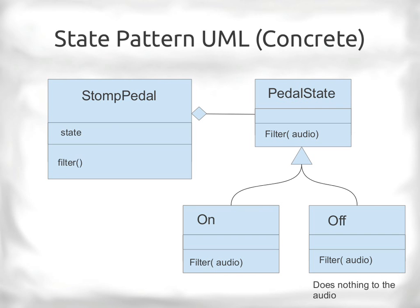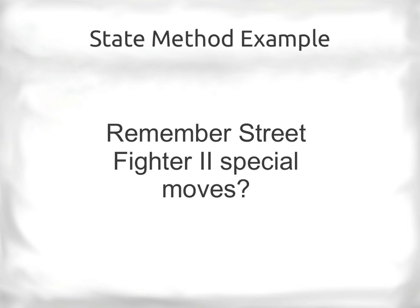Guitar pedals are often toggle switches — stomp on them and they're on, but they're a pass-through anyway. In the off state, you just pass the audio along. In the on state, you run it through a filter like fuzz or flange. When we change the stomp pedal's state, we assign either an instance of the on class or the off class.